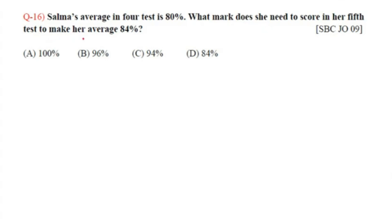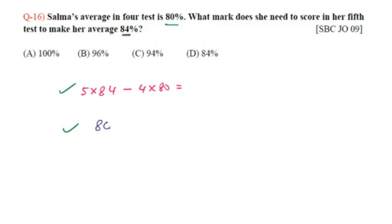Question number 16: Salma's average in 4 tests is 80%. What mark does she need to score in her fifth test to make her average 84%? Required total for 5 tests: 5 × 84 = 420. Total from first 4 tests: 4 × 80 = 320. Fifth test score needed: 420 − 320 = 100%. Option A, 100%, is the answer.